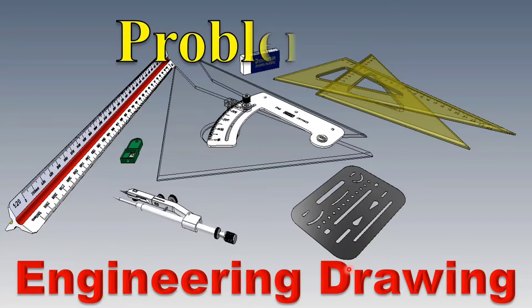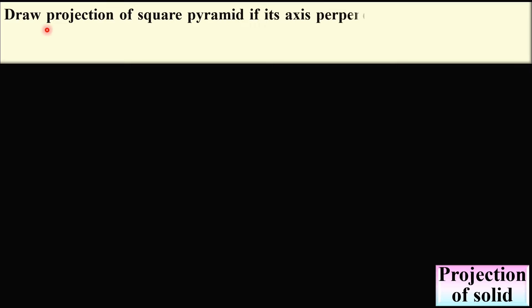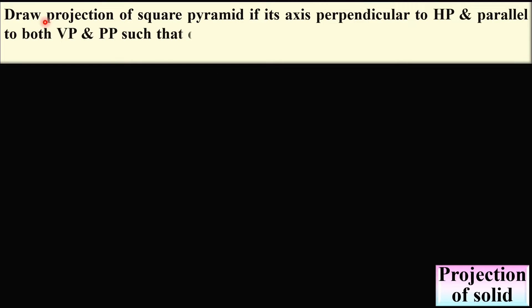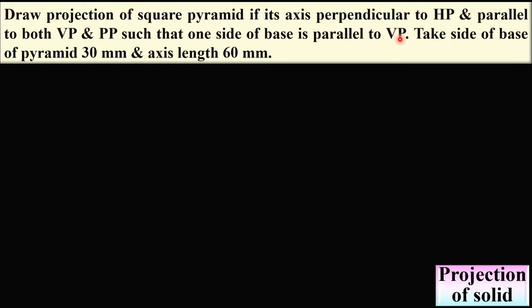Welcome to my engineering drawing playlist. Today we will see the problem on the projections of solids, specially to understand the concept of the projection of a solid. Draw projection of square pyramid if its axis is perpendicular to HP and parallel to both VP and PP — that means vertical plane and profile plane — such that one side of base is parallel to VP. Take side of base of pyramid 30 mm and axis length 60 mm.